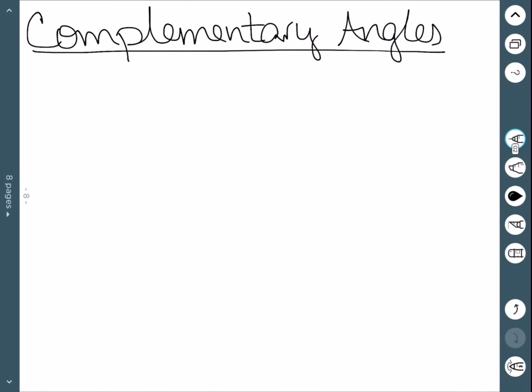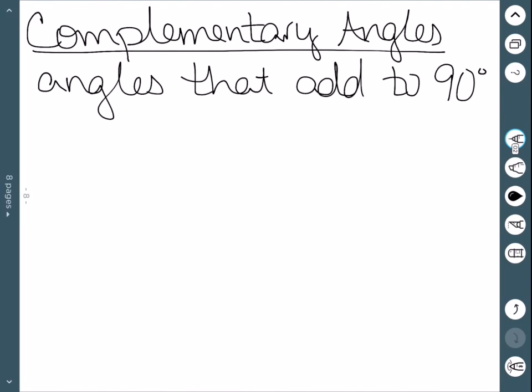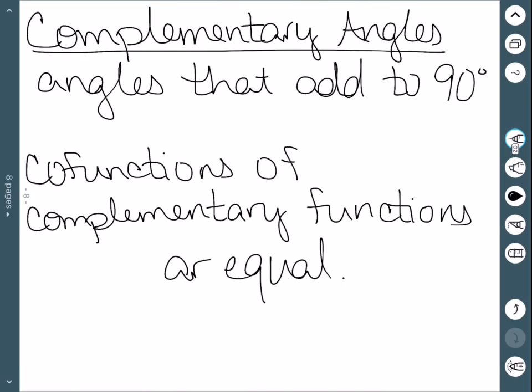We'll now talk about complementary angles and how they're related. So complementary angles are angles that add up to be 90 degrees. And we want to know how trig functions of complementary angles are related. When we're dealing with complementary angles, co-functions of these complementary angles are always going to be equal.